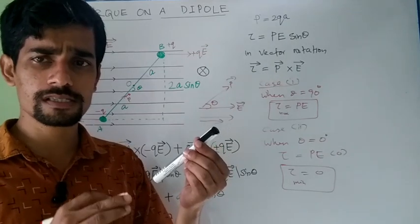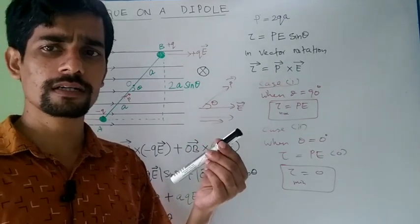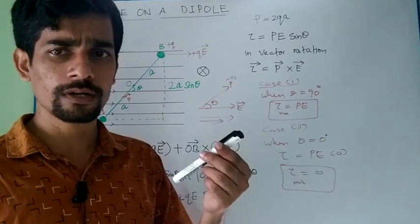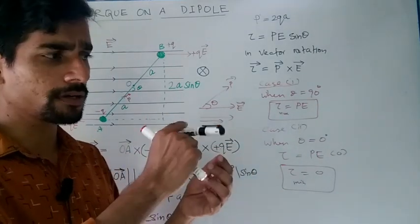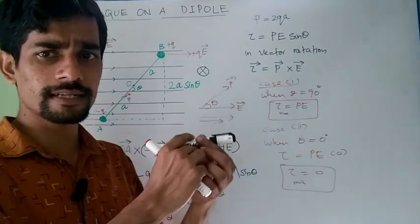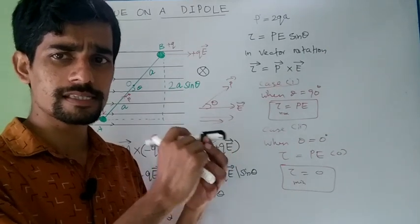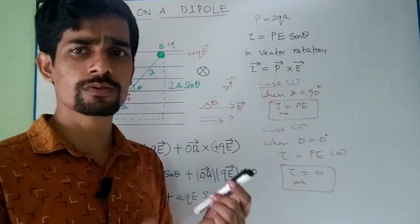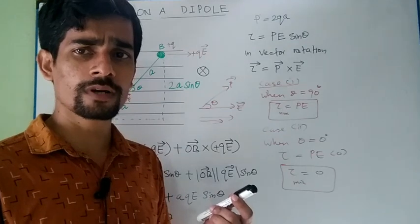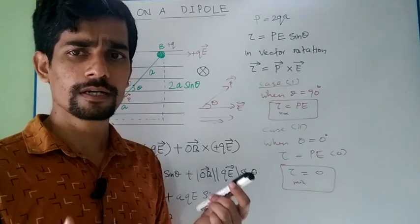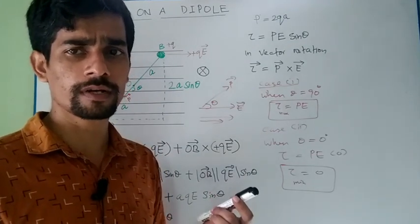Because of this force and torque experienced by this water molecule, they will rotate. And because of this rotation, heat energy is produced and this heat energy is used for cooking or heating the food items placed in a microwave oven. And this is the basic principle of working of a microwave oven.